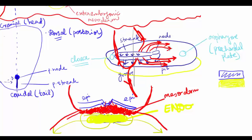There's also a bit of mesoderm here known as the cardiogenic mesoderm, and this gives rise to the heart.